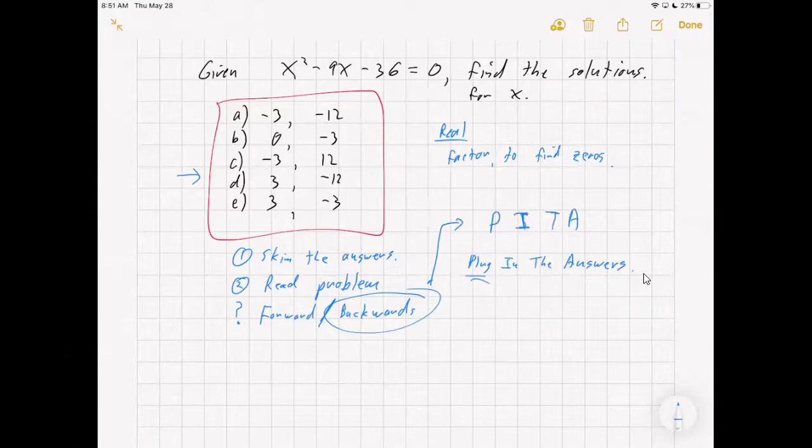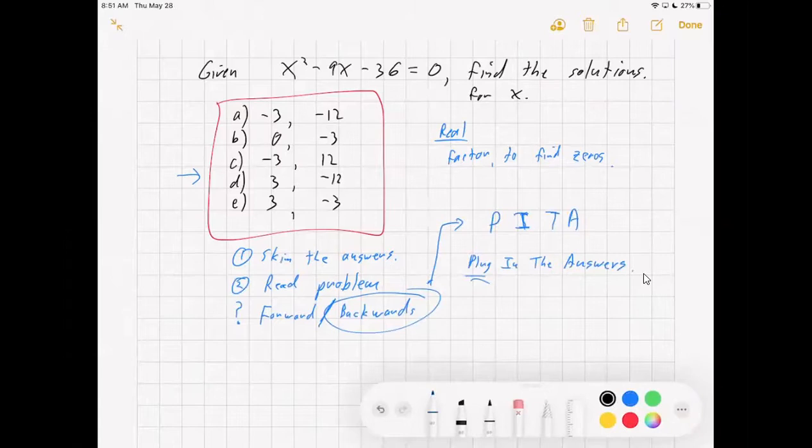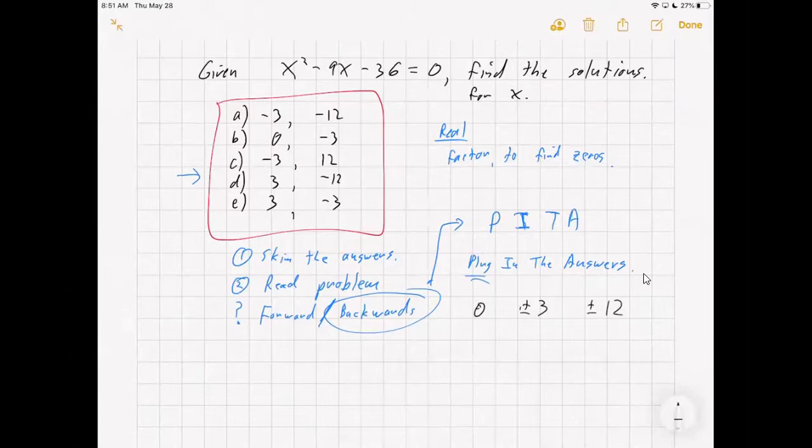So what I would do if I'm plugging in the answers, in this case, I would rank the numbers that are up there all by glancing quickly at the answers. I know there are zeros, there are plus and minus threes, and there are plus or minus twelves. In fact, that's the order of complexity, zero, positive three, negative three, positive 12, negative 12. So if you're plugging in the answer, start with the easy thing. So if I were to start by plugging in the zero, I can see I get zero minus zero minus 36.